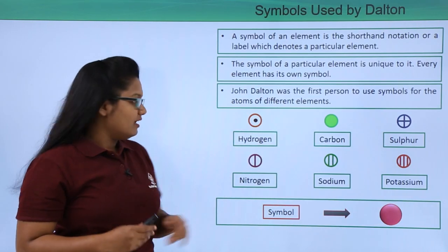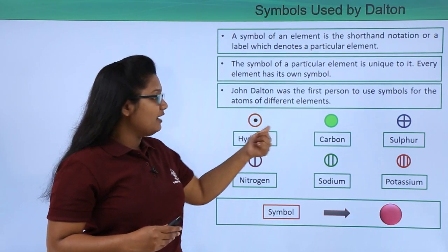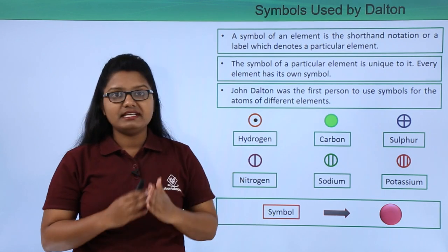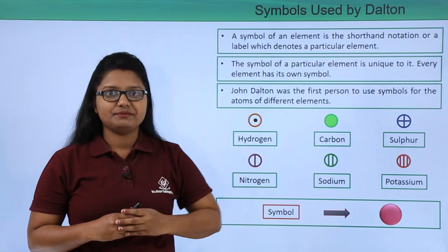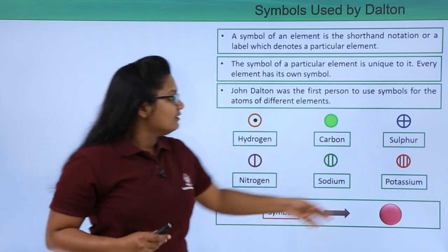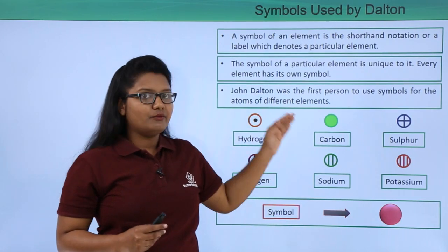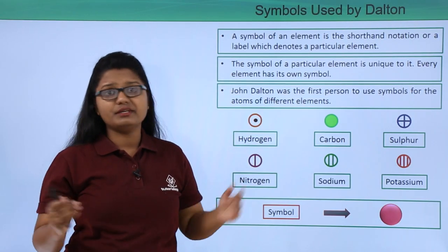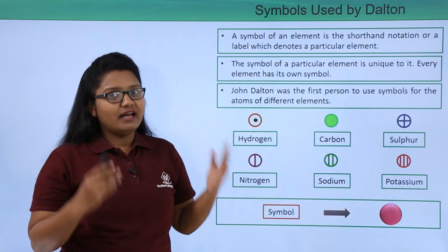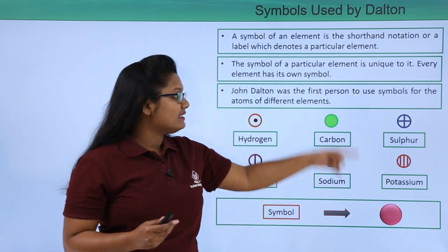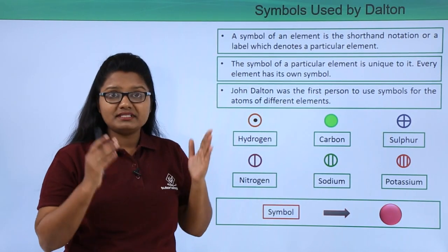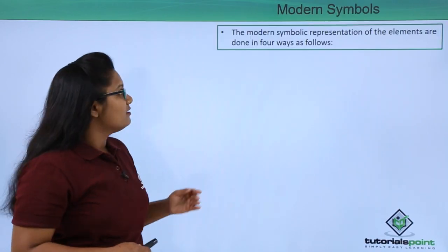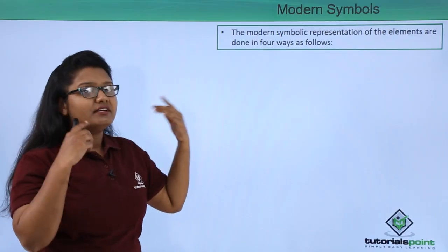So this symbol of hydrogen represents one atom of hydrogen, and this symbol of nitrogen represents one atom of nitrogen. Although these symbols were quite simple, they were still confusing and tedious to remember. Nowadays we do not make use of these symbols — we have simpler ones.